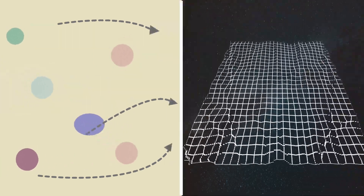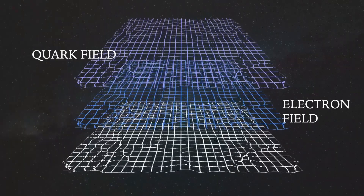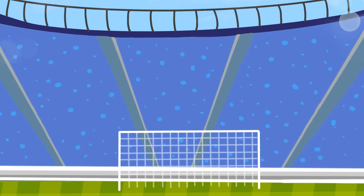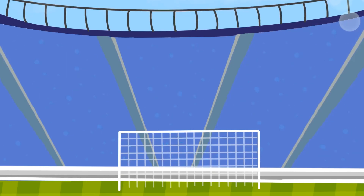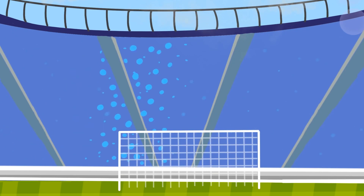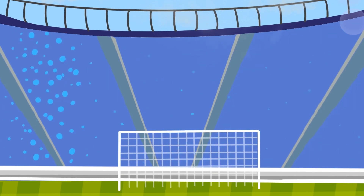Each of these particles has a respective field in space-time. For example, there is a quark field, an electron field, and so on. The weird thing is, a particle in this field theory is actually an excitation of its field. Let's imagine that the field of a particle is a crowd of spectators at a sports arena. A crowd of sports watchers is never static, just like the real field. Let's say that some fans get really excited — pun intended — and they start a Mexican wave that spreads across the stadium. This wave is what we perceive to be a particle.